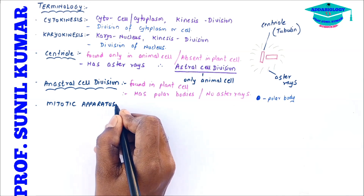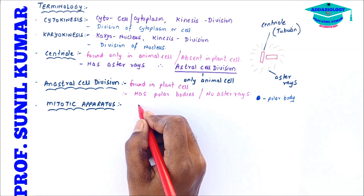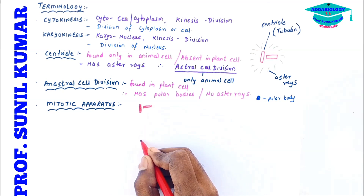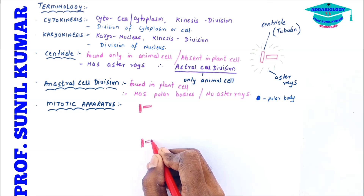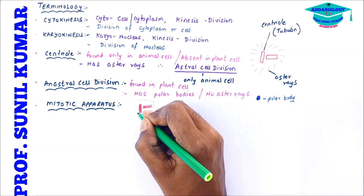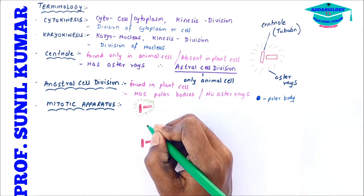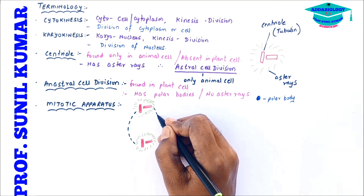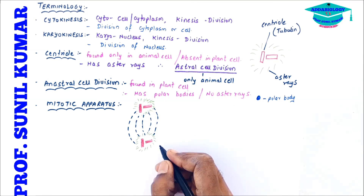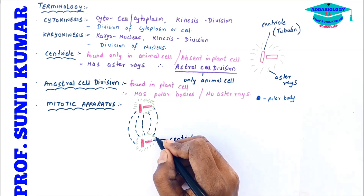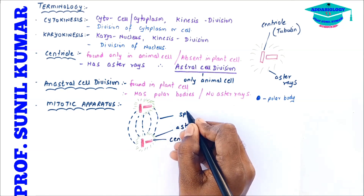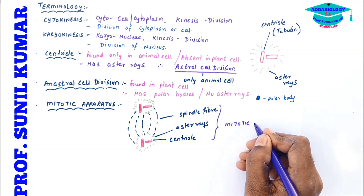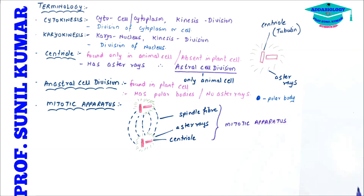The mitotic apparatus consists of the centrioles, aster rays, and spindle fibers together. The two centrioles are made of tubulin protein and give out aster rays, and they are connected to each other by spindle fibers. This entire setup — centriole, aster rays, and spindle fiber — makes up the mitotic apparatus. Spindle fibers are kinetic in nature, meaning they move towards each other.